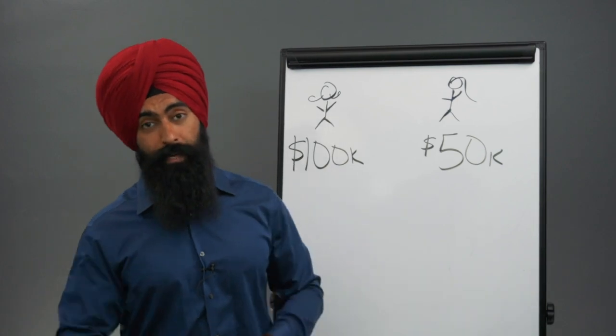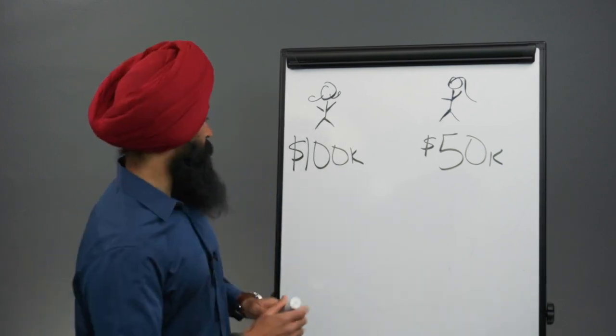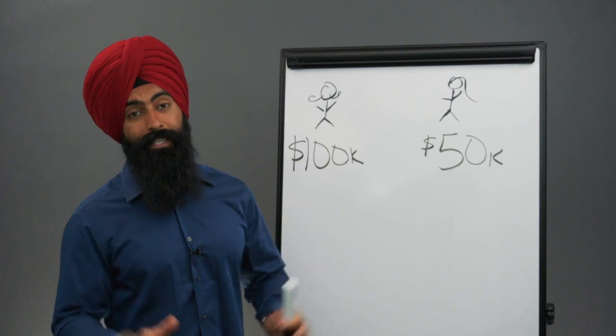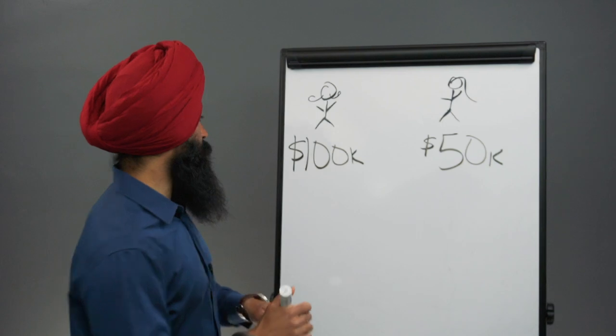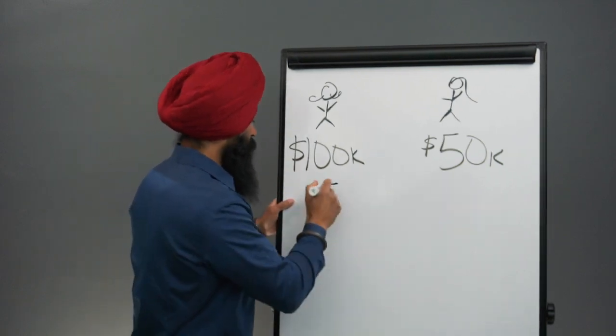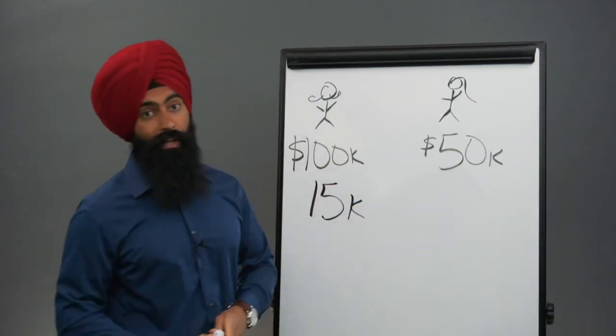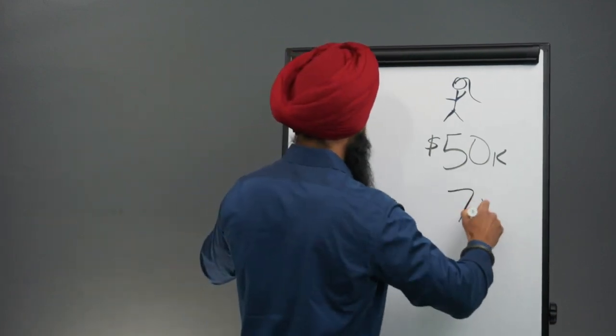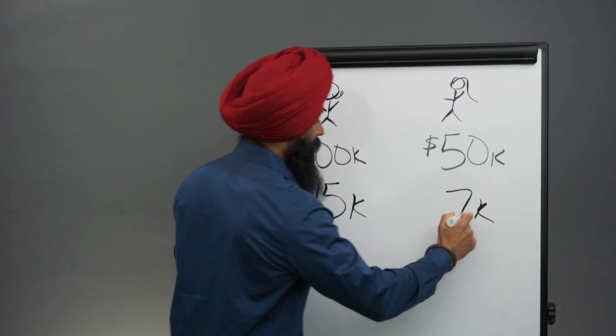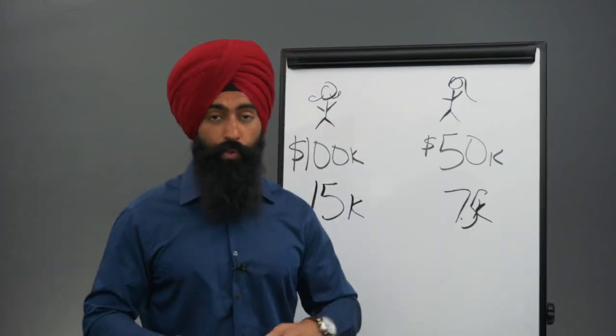Now, based off of this information, if both of these people started investing 15% of their income when they started working because they were both financially savvy enough to start doing that, that means cousin Bunty started investing $15,000 a year as soon as he graduated school and sister Paramjit started investing $7,500 a year as soon as she graduated school.